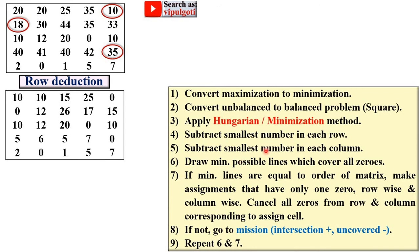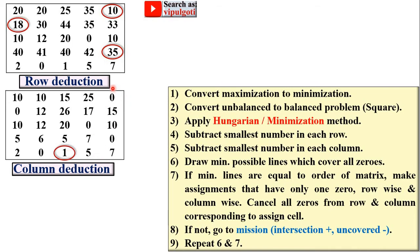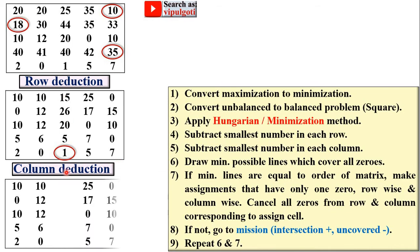Next, subtract the smallest number in each column — this is called column reduction. Columns 1, 2, 4, and 5 have a minimum of 0, so they are skipped. Column 3 has a minimum of 1. So subtract 1 from all values of column 3, giving you the new matrix.